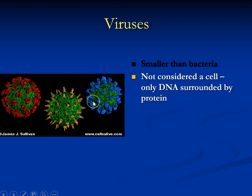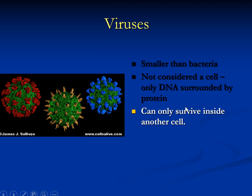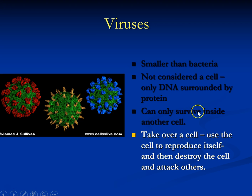What viruses do is trick a cell — they knock on the cell membrane, and the cell lets the virus in. The virus has tricked its way into the cell. Then the virus inserts its DNA into the cell's DNA, and uses the cell's parts to make more and more copies of the virus — until there are so many viruses that the cell explodes and breaks apart. The viruses then go off and try to trick other cells into letting them in and reproducing.